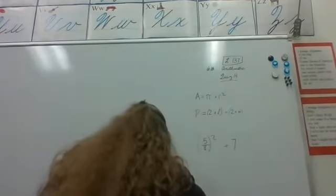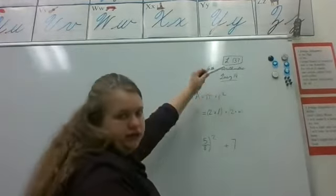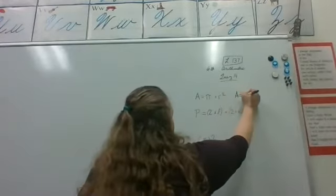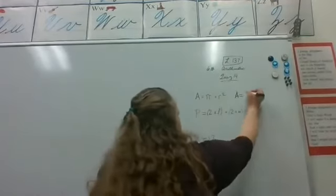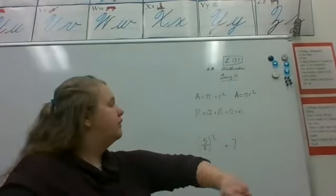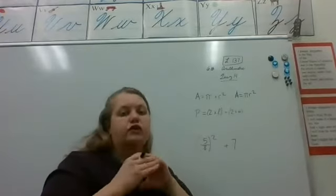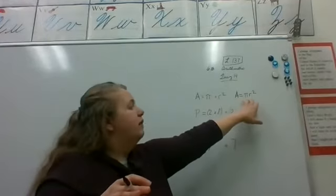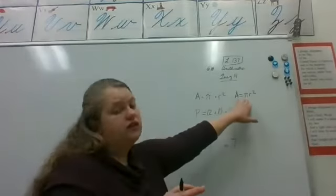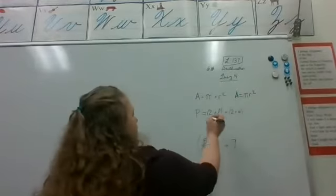So our formula here is A equals pi times r squared. The quicker way to write that and to not use the x, we would just say pi r squared, right? We wouldn't even need to put the pi and the r. We're not going to mix them up as two different, as one number versus two numbers. If we had put 3.14 and the number that represents r, maybe it's 5, 3.14, 5, then we would be mixing it up. But with letters, or you could have one letter and a number, that's okay.